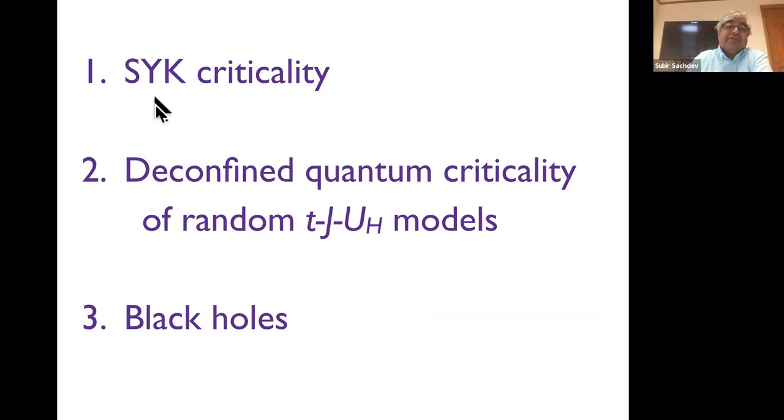I'll define what I mean by it, which has some features that look like strange metals and also that look like black holes. And then in the remaining two parts of my talk, in part two, I'll talk about a more realistic model, but still quite removed from the real situation, but closer to it, where at least we can find in this model indication of a strange metal down to zero temperature. And then hopefully I'll have some time to also talk about the connection to black holes. So let's start with SYK criticality.